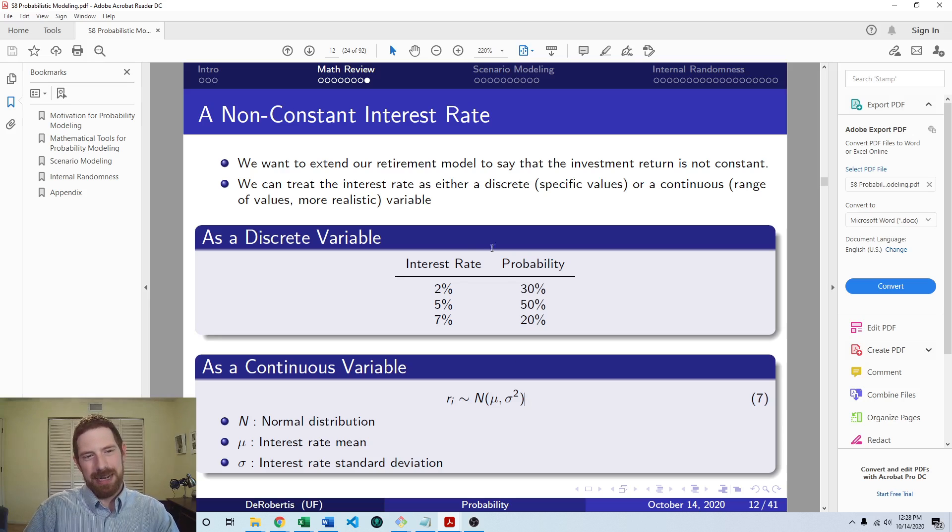Or we can treat it as a discrete variable. Here we've got three different possible values for the interest rate and three different probabilities for each. So this is also showing you how the difference in the probability distributions are when you treat it as continuous versus discrete. Discrete, we've got a table with the probabilities associated with the outcomes. And continuous, it's defined by a distribution.